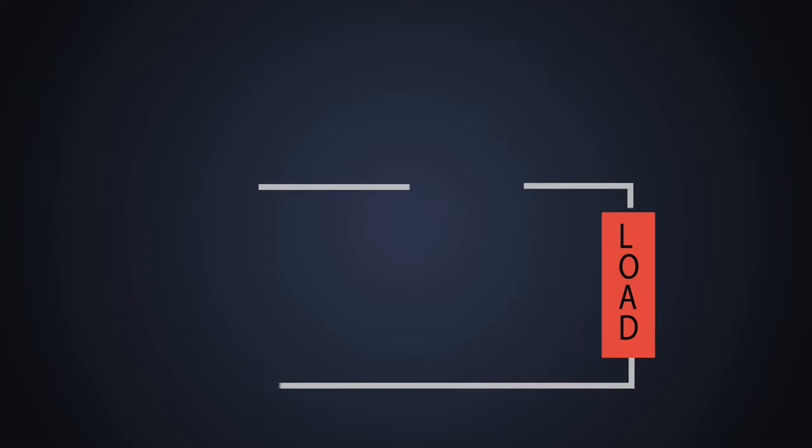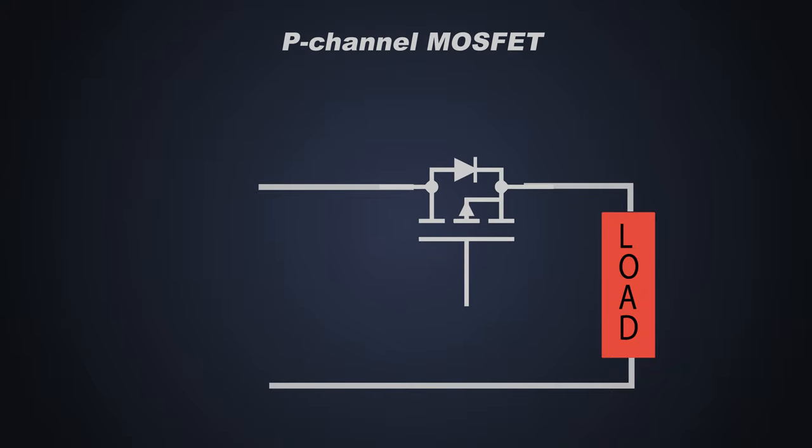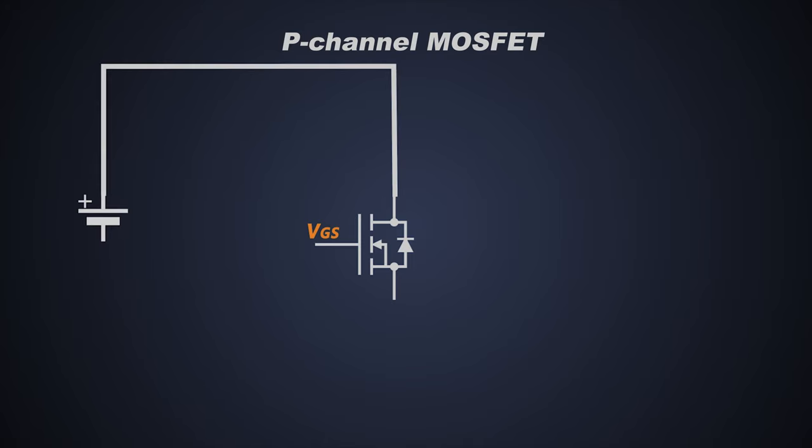Next device for reverse polarity protection is p-channel MOSFET. In this application the MOSFET works in two different modes, first is diode mode and MOSFET mode. We saw in one of our previous videos, during the manufacturing of the MOSFET, a parasitic p-n junction diode is created within the MOSFET cell.